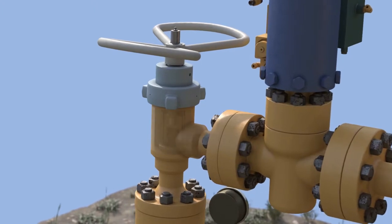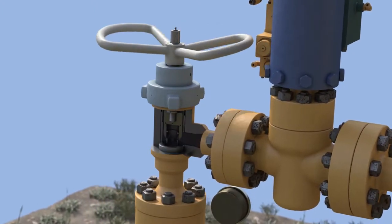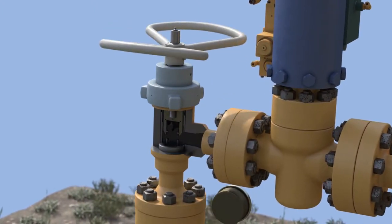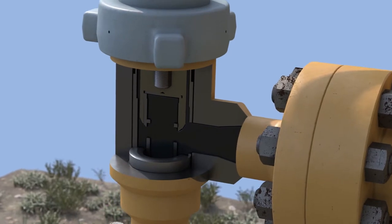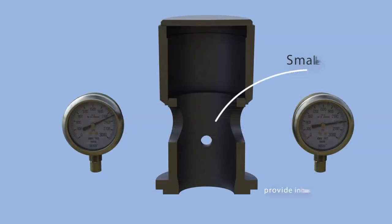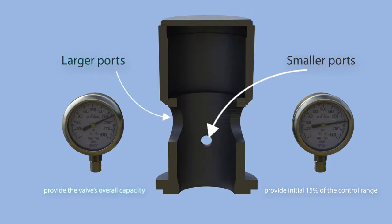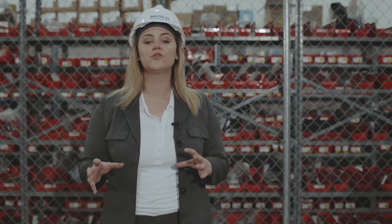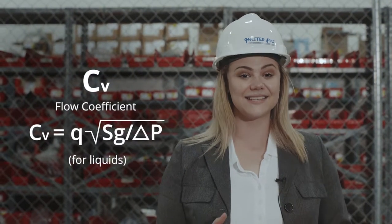MasterFLOW's standard trim provides a high level of control over its life. The smaller, lower ports provide the initial 15% of the control range, while the larger ports provide the valve's overall capacity. This results in an equal percentage flow characteristic curve and high liquid pressure recovery factor.